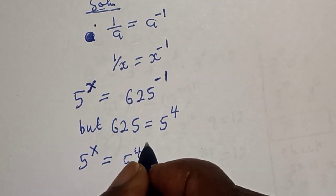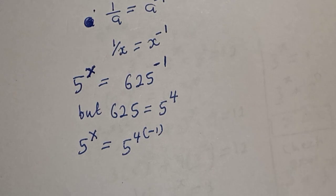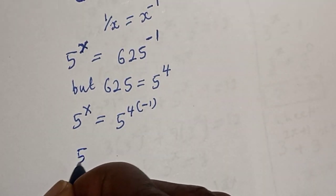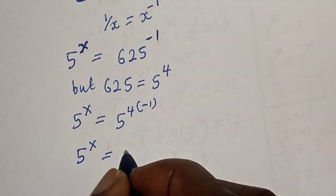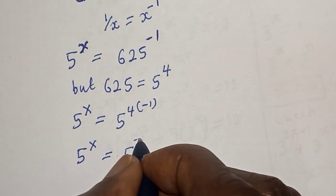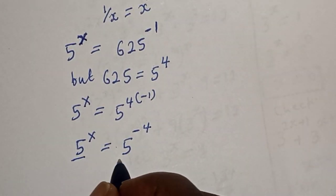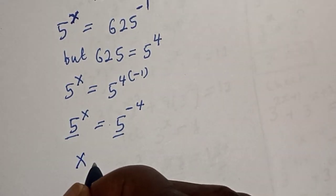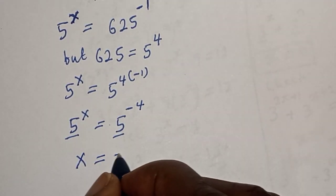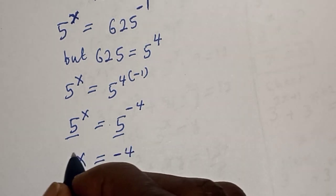Then this is 5 raised to power x is equal to 5 raised to power 4 multiplied by minus 1. And this is 5 raised to power x is equal to 5 raised to power minus 4.